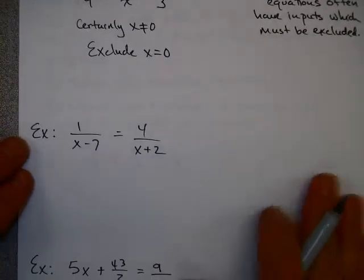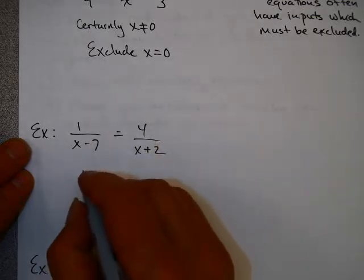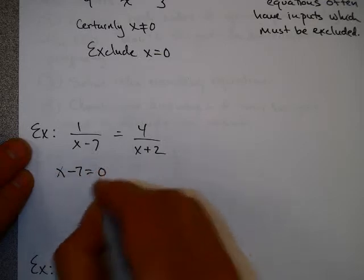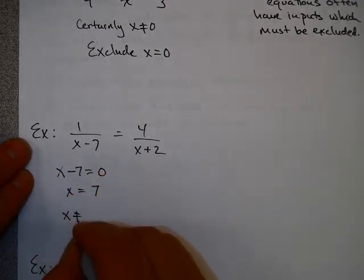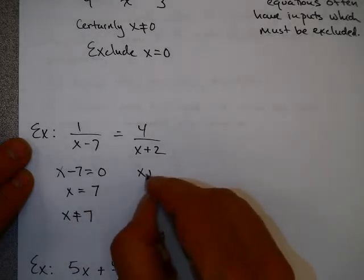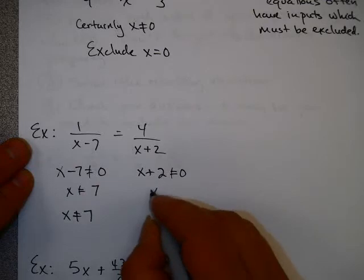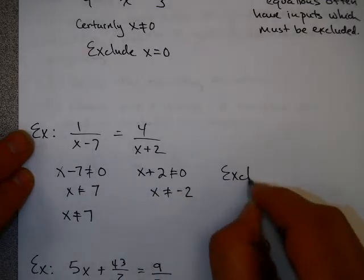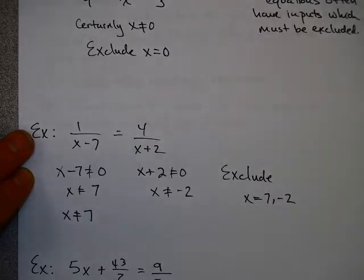Here's one that's a little bit different: 1/(x-7) = 4/(x+2). Here you cannot have the denominator x-7 equals 0, so x cannot equal 7. And here, x+2 cannot equal 0, so x cannot equal negative 2. So we'll again have to exclude the values x equals 7 and negative 2 in this case.